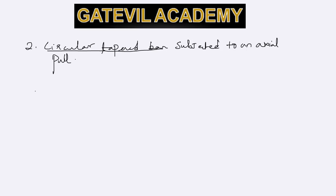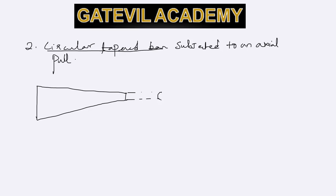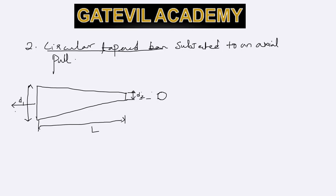Now we have a tapered bar with a circular cross-sectional area. The diameter at one end is D1 and the diameter at the other end is D2. The length of the bar is L, and there is an axial pull applied to it equal to P.